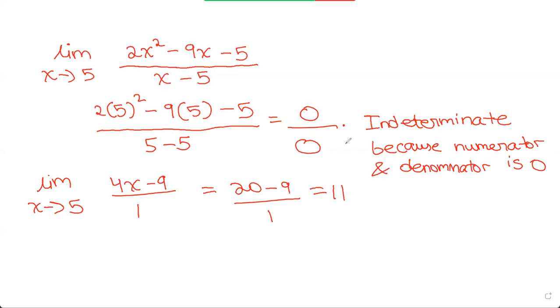Now that we've got this value, we should clearly write our final answer. We should write it like this: limit as x tends to 5 of 2x squared minus 9x minus 5 divided by x minus 5 is equal to 11. So this is what we have to write, and this is the final answer.